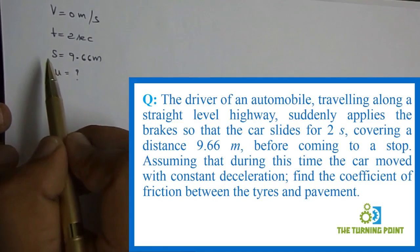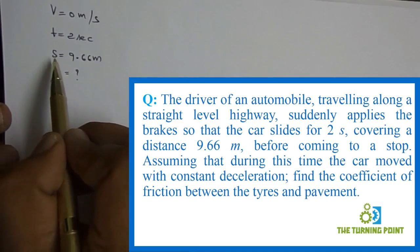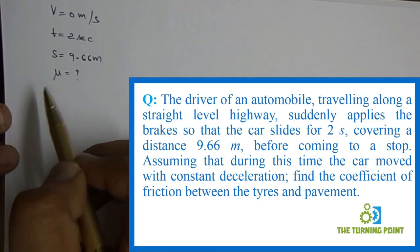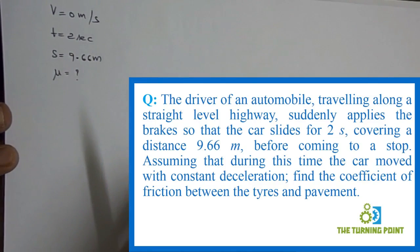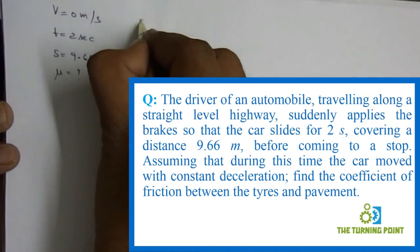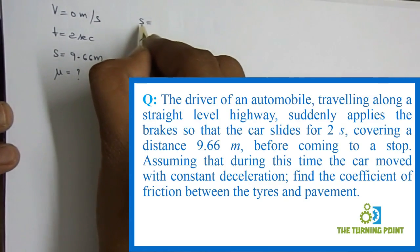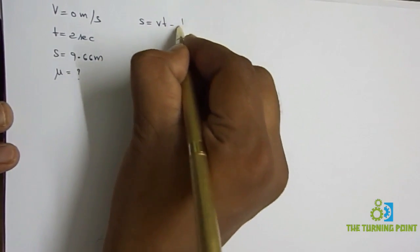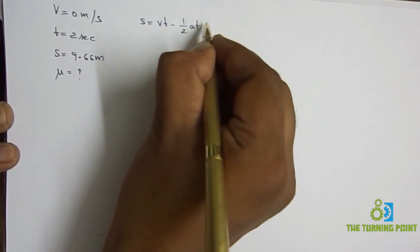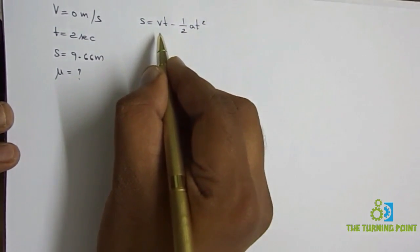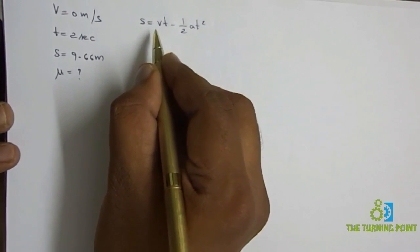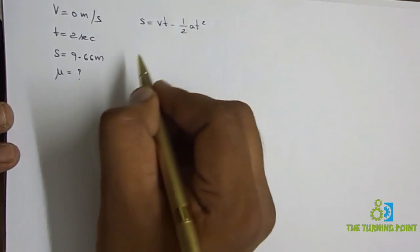For this problem, first we need to calculate the acceleration. The relation between displacement, final velocity, acceleration, and time is: if we use final velocity, s = vt − ½at². If we use initial velocity, s = ut + ½at².